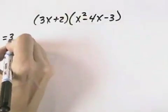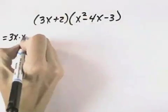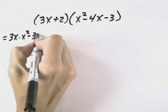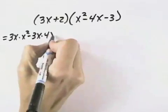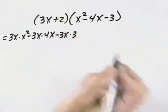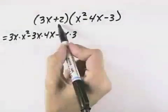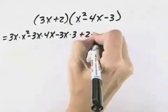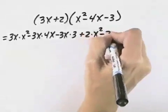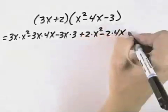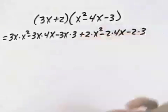So we'd start by taking the 3x and we'll multiply it by the x squared. Then we have minus the 3x times the 4x, and then minus the 3x times the 3. We want to do the same thing with the 2. So we have plus 2 times x squared, minus 2 times 4x, minus the 2 times the 3.